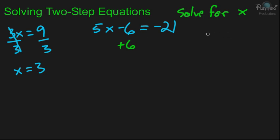Now, if you remember, an equation is kind of like a scale that's balancing on the equal sign. And if you add 6 to one side, you also have to add 6 to the other side in order for it to balance. So, we're going to add 6 to both sides.